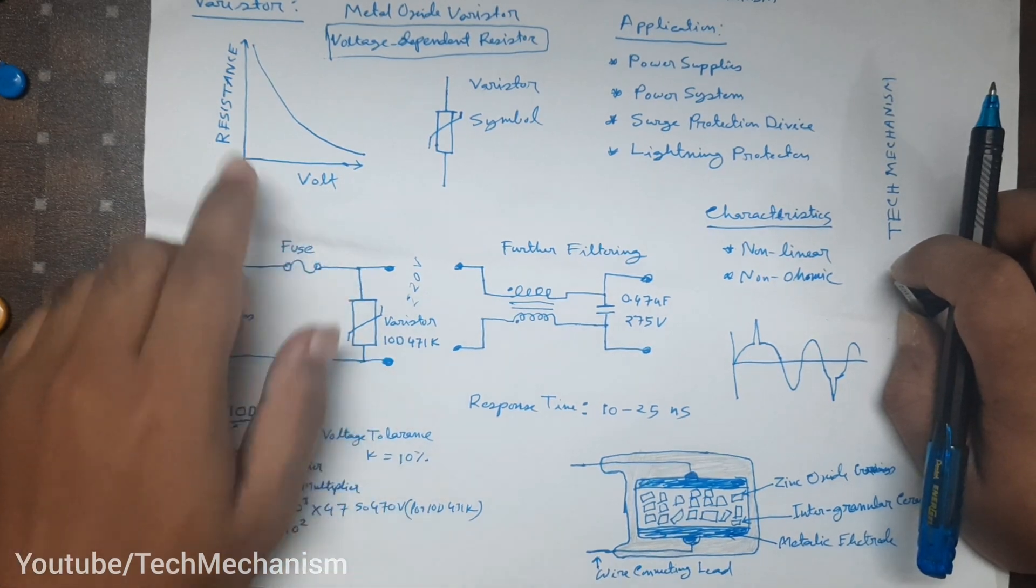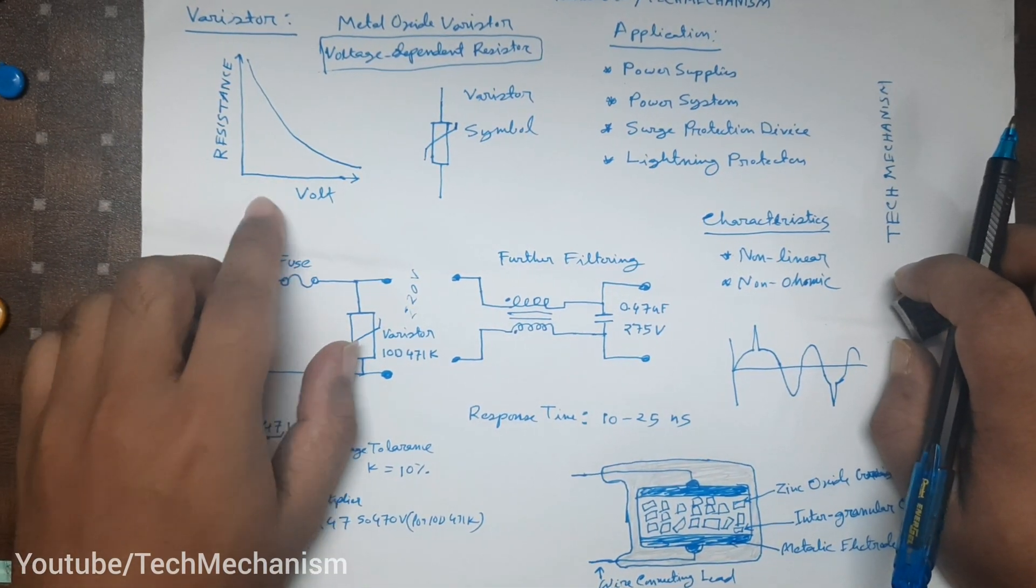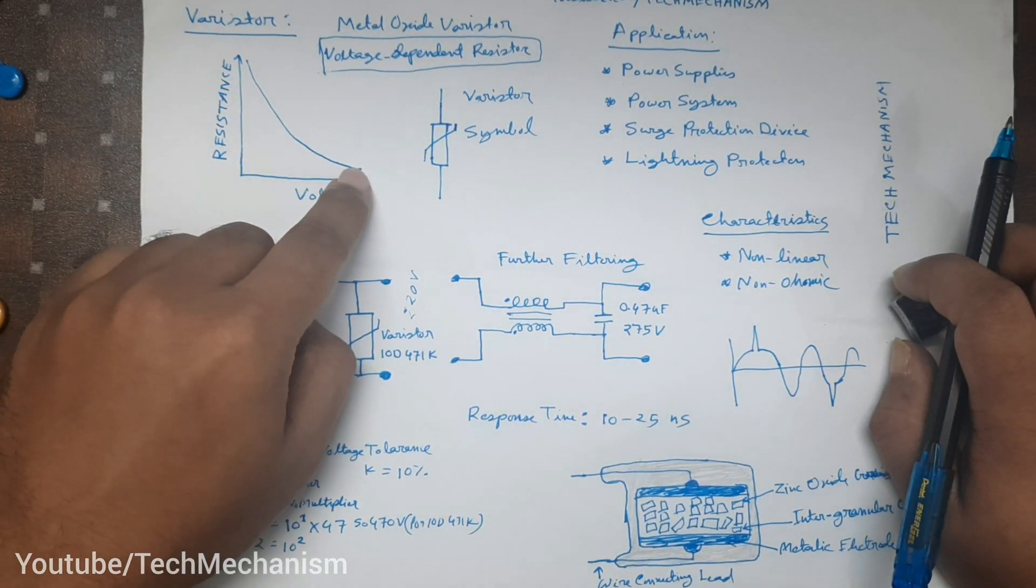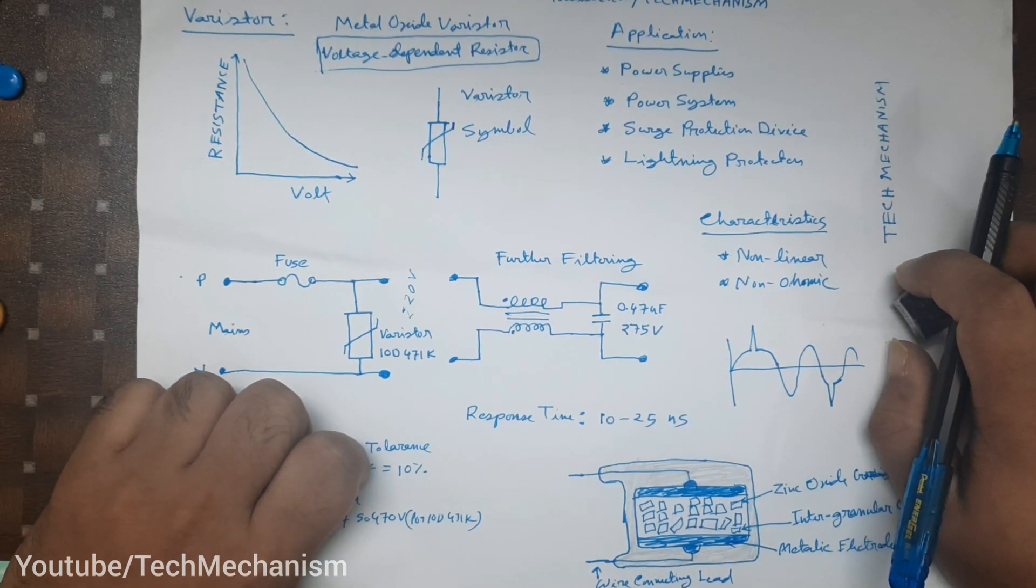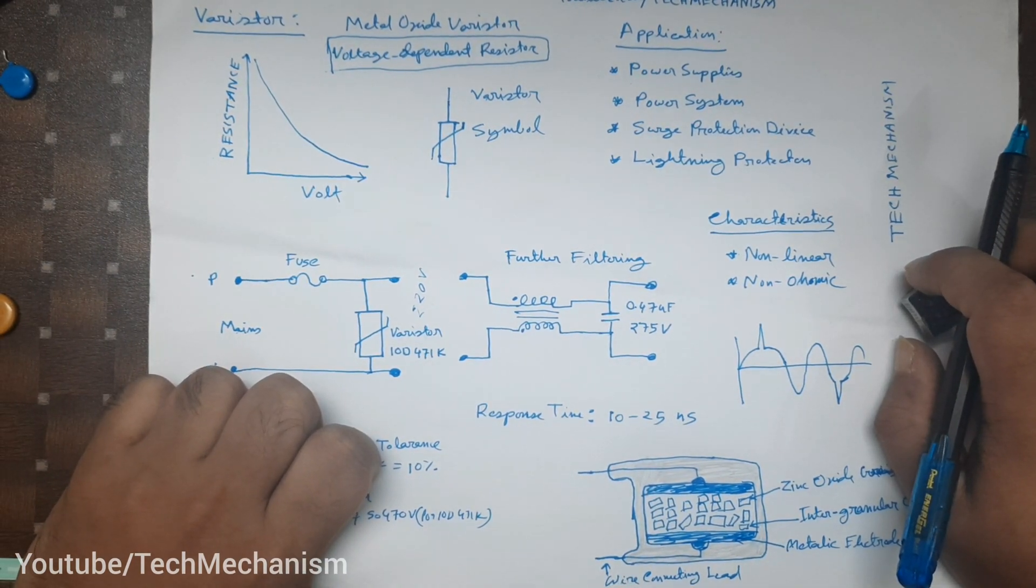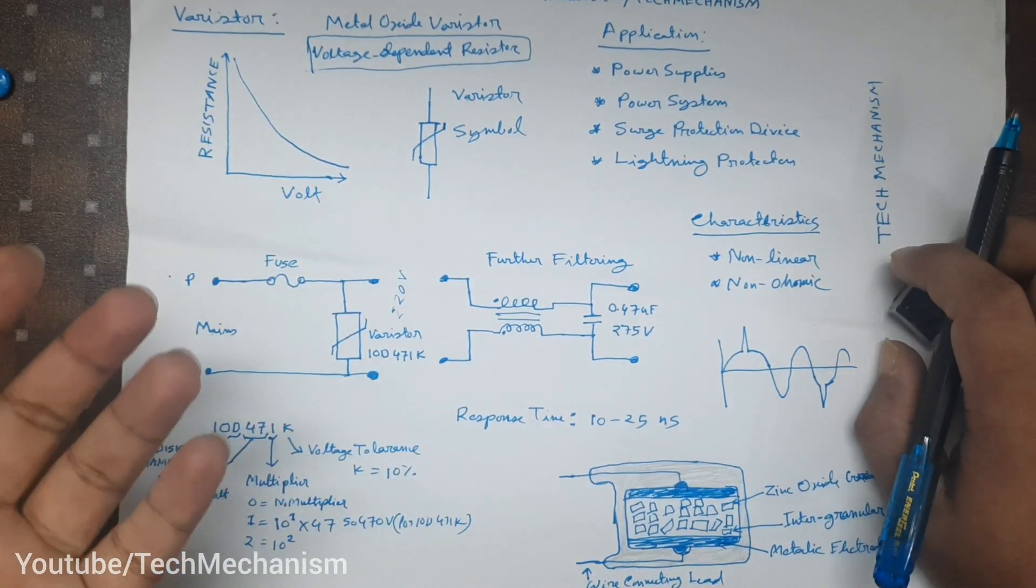If we can see the characteristic of varistor, the higher the voltage, the lower the resistance. What is varistor? Varistor is a metal oxide varistor. For short, it is a voltage dependent resistor in which the resistance material is a metallic oxide, like primarily zinc oxide pressed into a ceramic-like material.